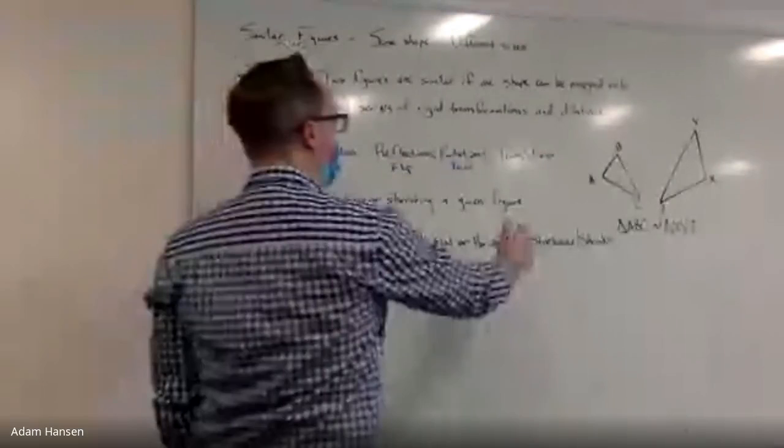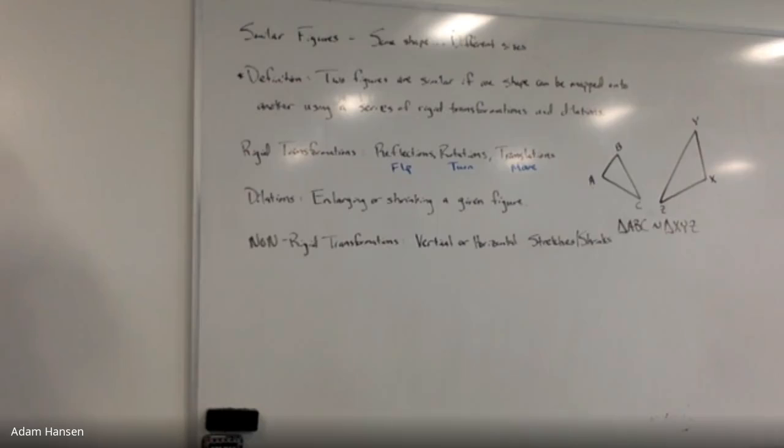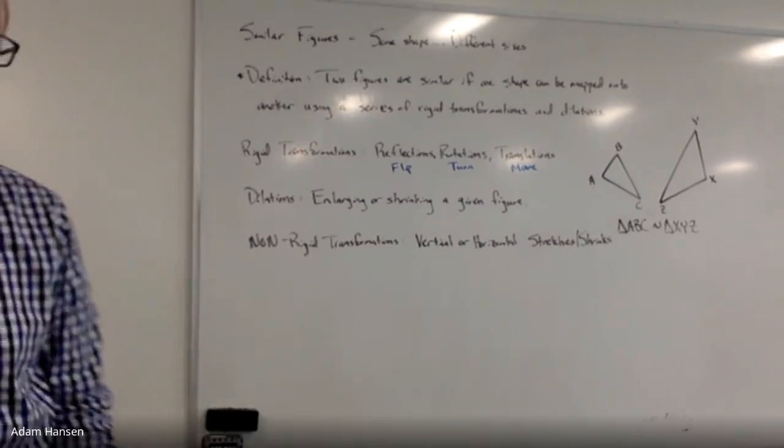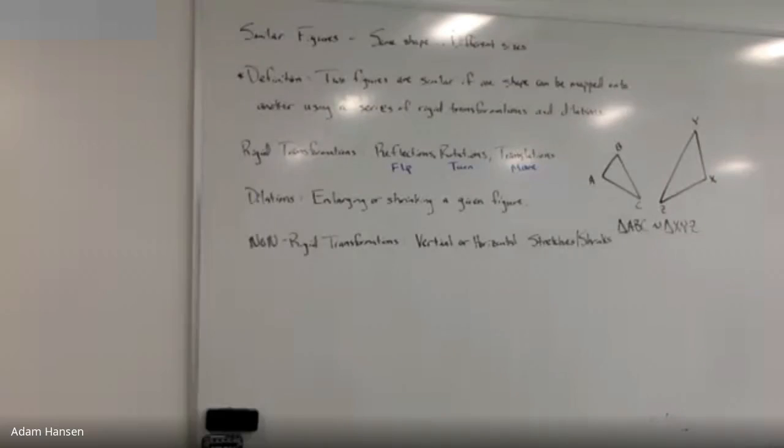Lastly is translation. Translation just moves it some direction: up, down, left, or right. For all three of these rigid transformations, I'm not changing the size. They preserve distance between points.